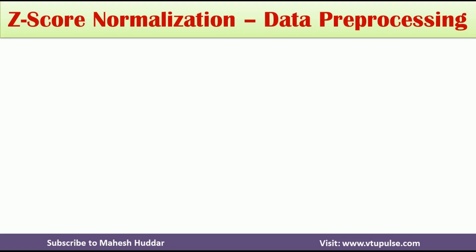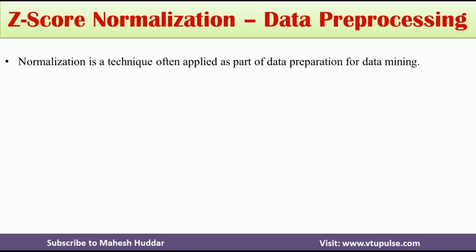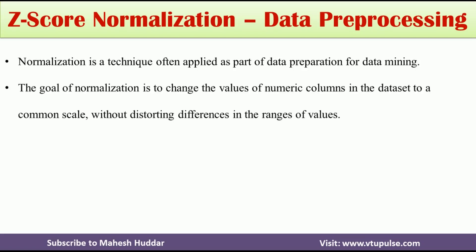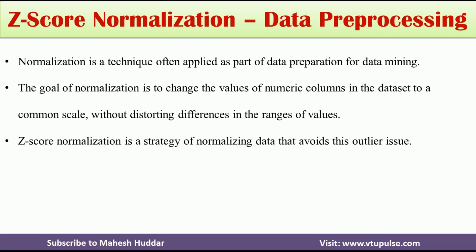Normalization is a technique often applied as part of data preparation for data mining. The goal of normalization is to change the values of numeric columns in the dataset to a common scale, without distorting differences in the ranges of values. Z-score normalization is a strategy of normalizing data that avoids the outlier issue.